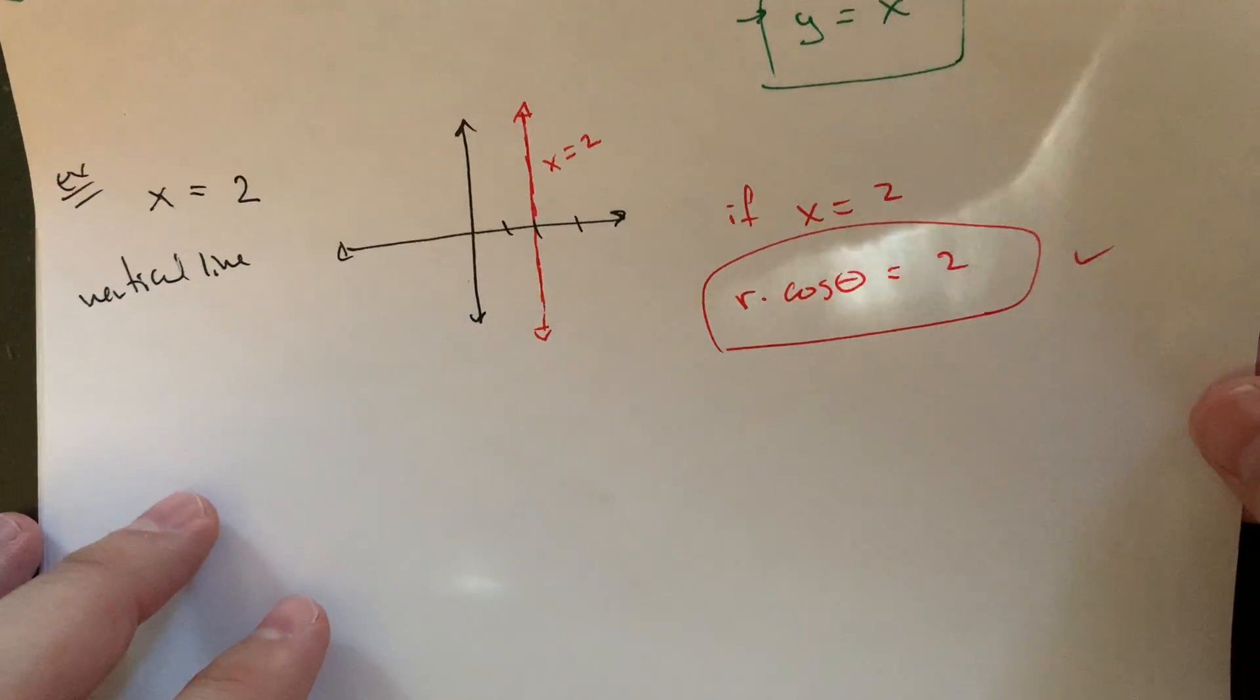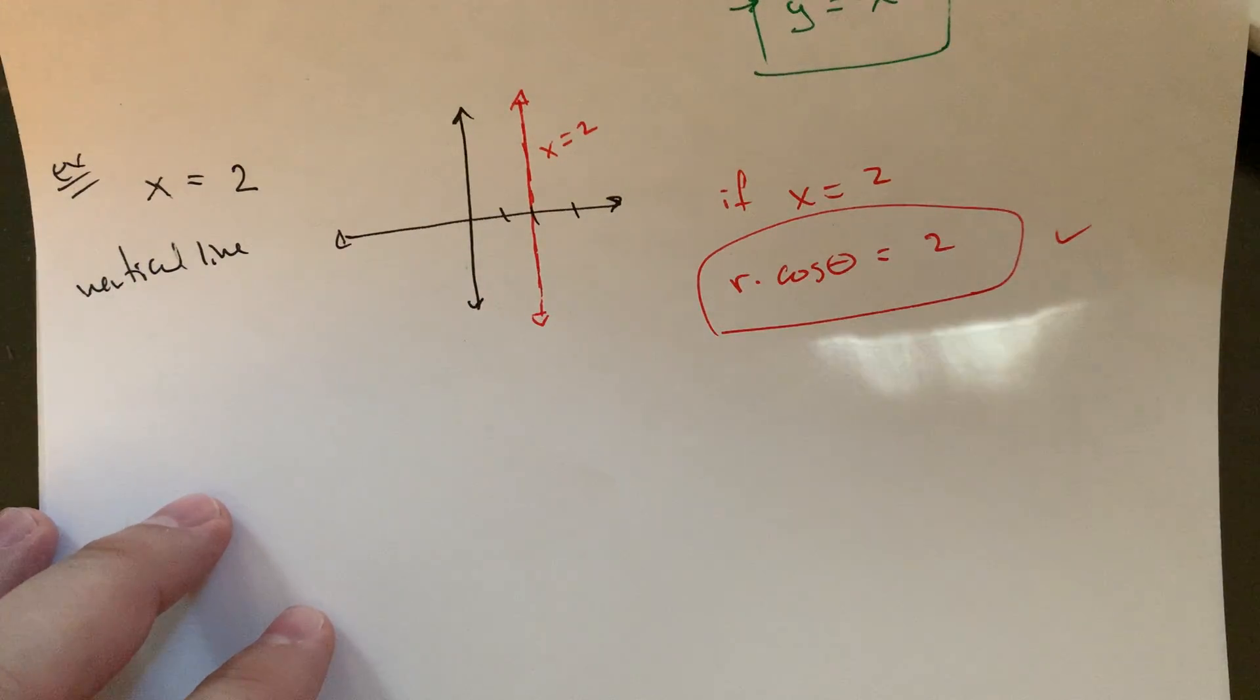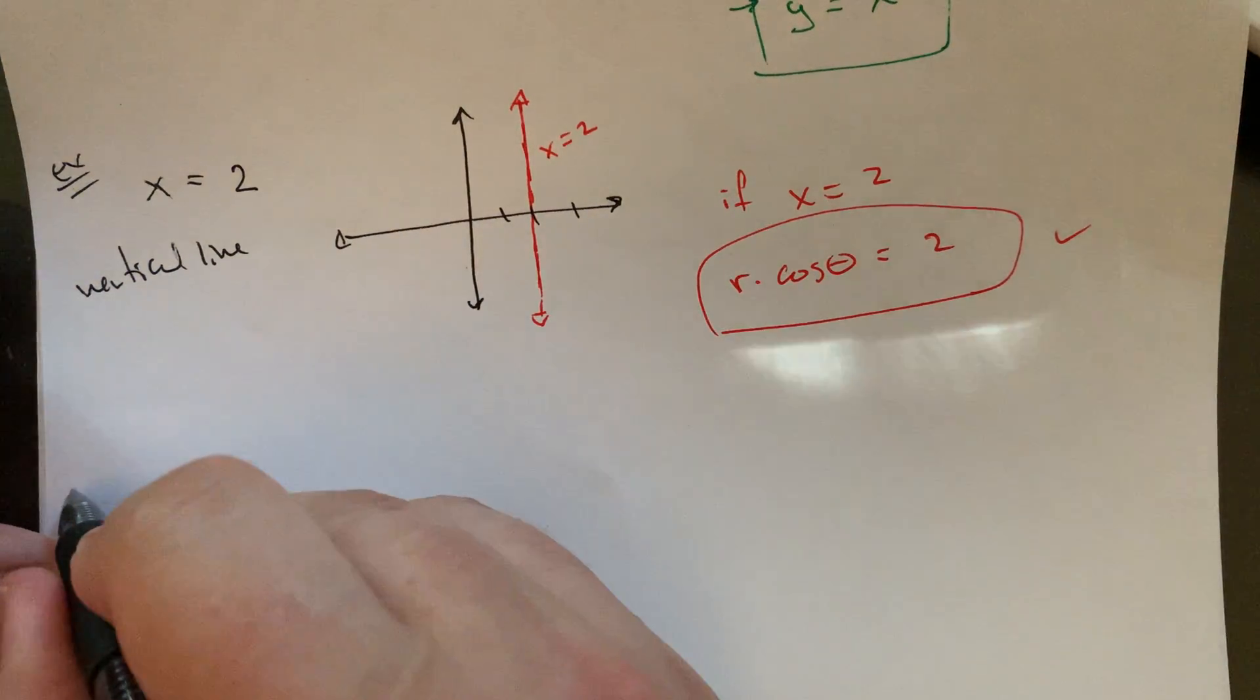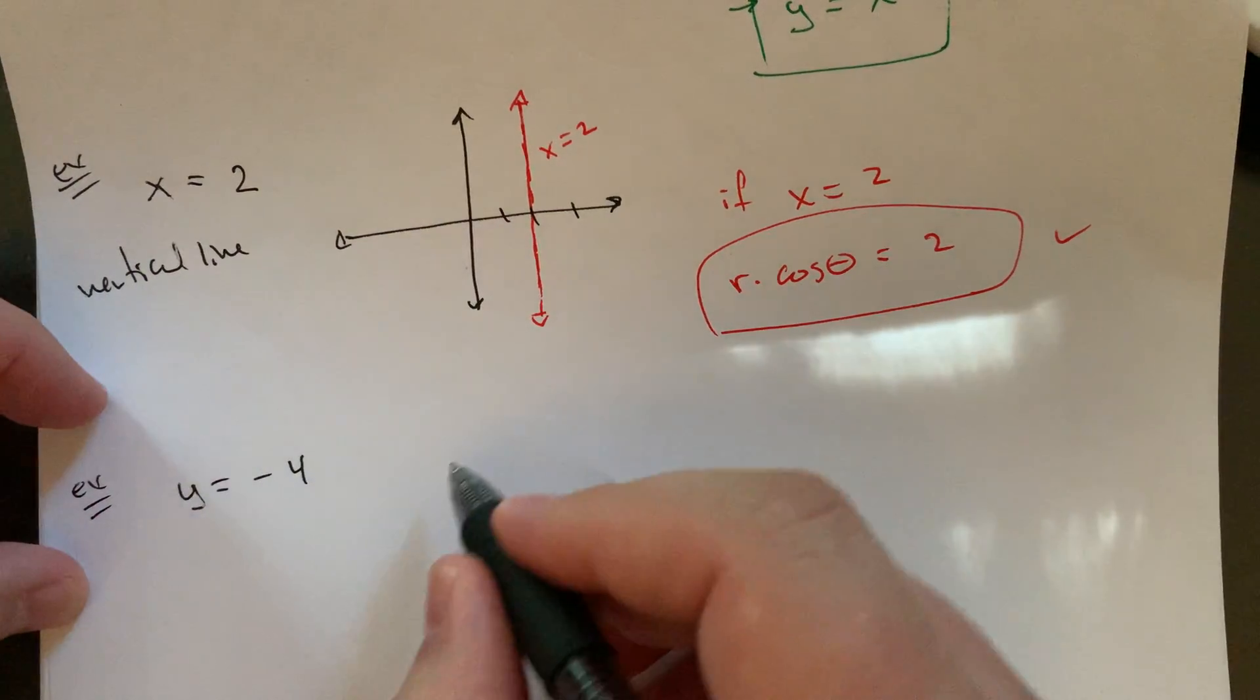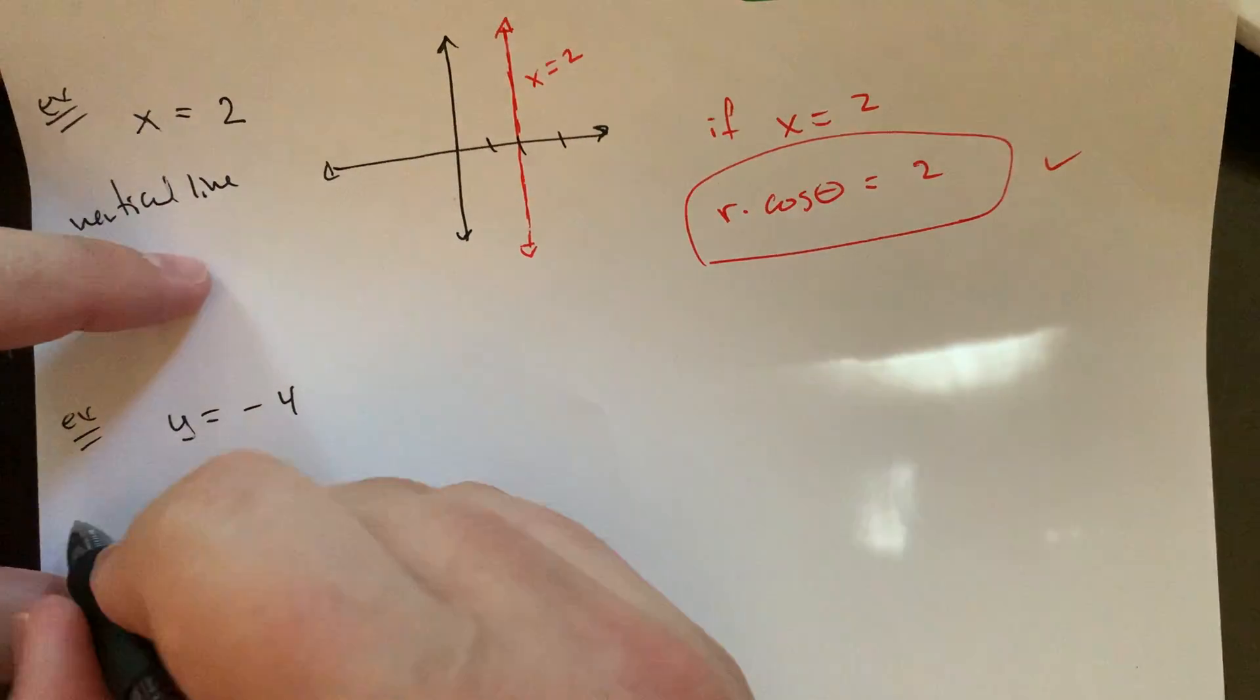So that's kind of interesting. You could imagine then I'm probably also doing what if I do y equals, y equals negative four or something. So that's going to be a horizontal line.